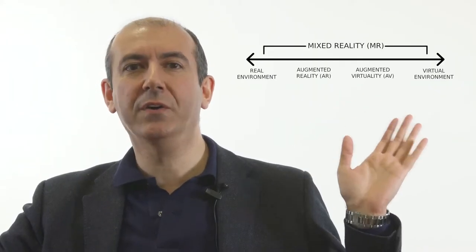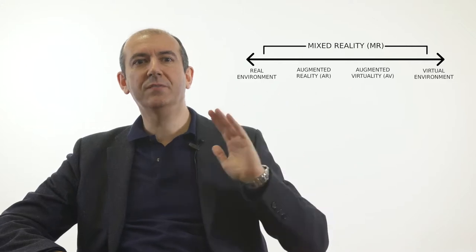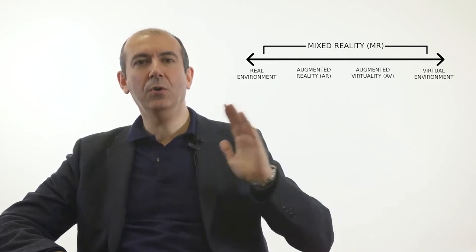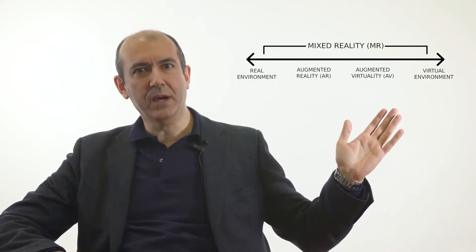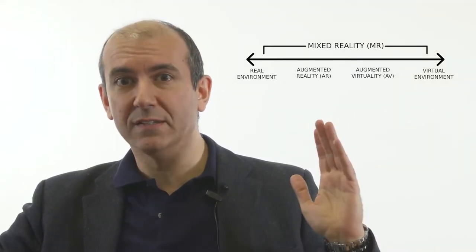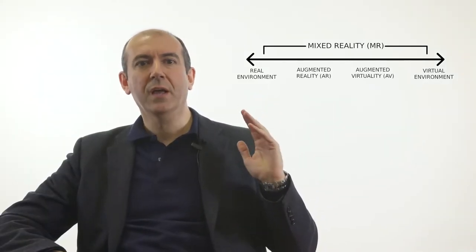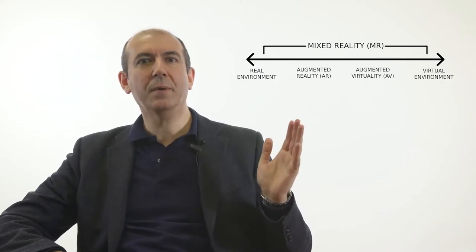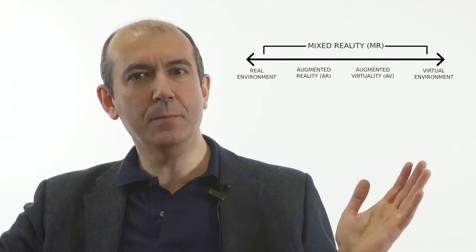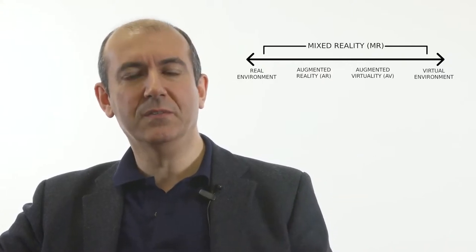In order to understand better the concept, let's have a look at this graph of the reality-virtuality continuum, where we can see there is a space between the real environment and the virtual environment. All this space is called mixed reality, and in between we have intermediate realities or virtualities called augmented reality (AR), which is the place where virtual objects augment the reality, and then we have augmented virtuality, which is the place where real objects augment the virtual reality.